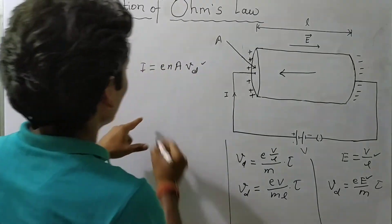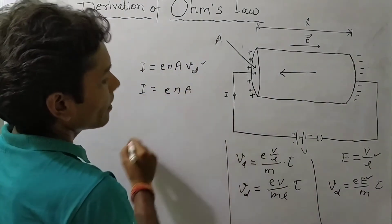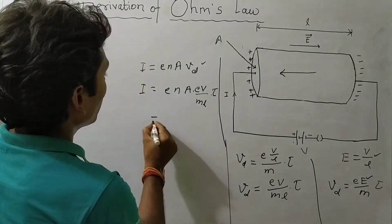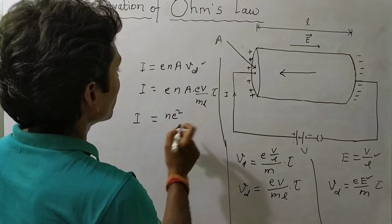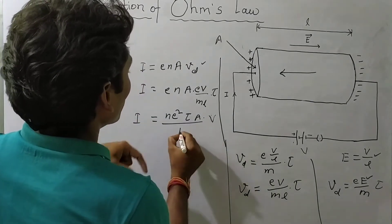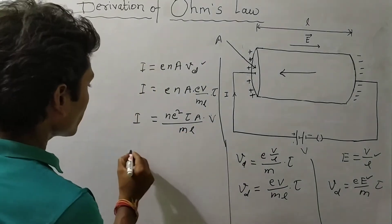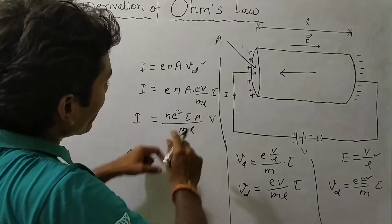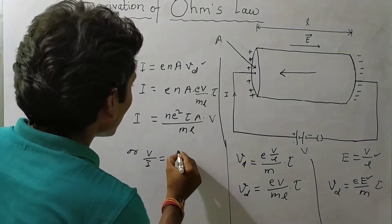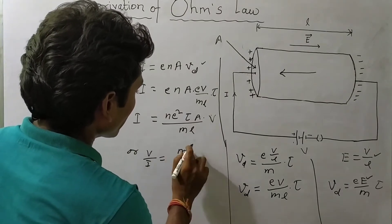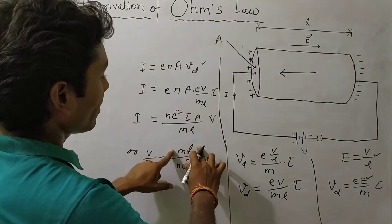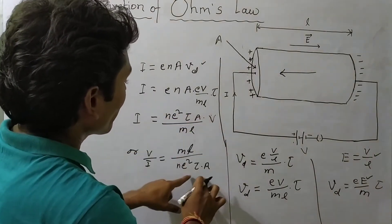On putting the value of Vd, I = nAe · (eV / mLτ), which gives I = nAe²Vτ / (mL). Rearranging, V/I = mL / (ne²τA).